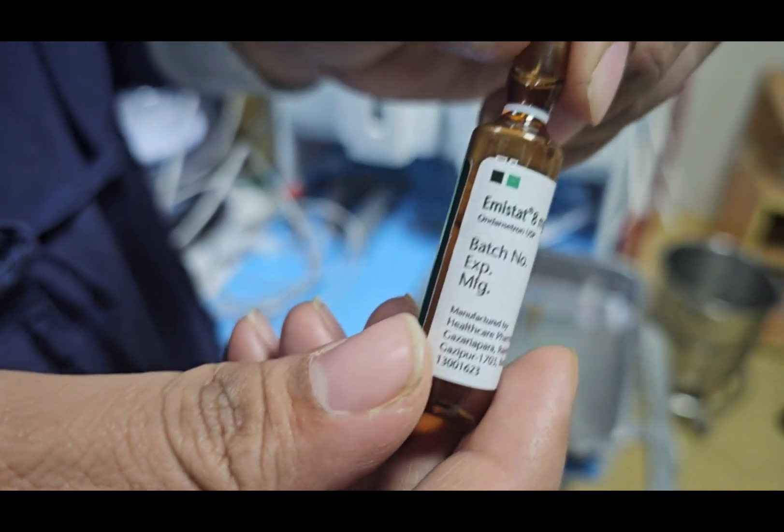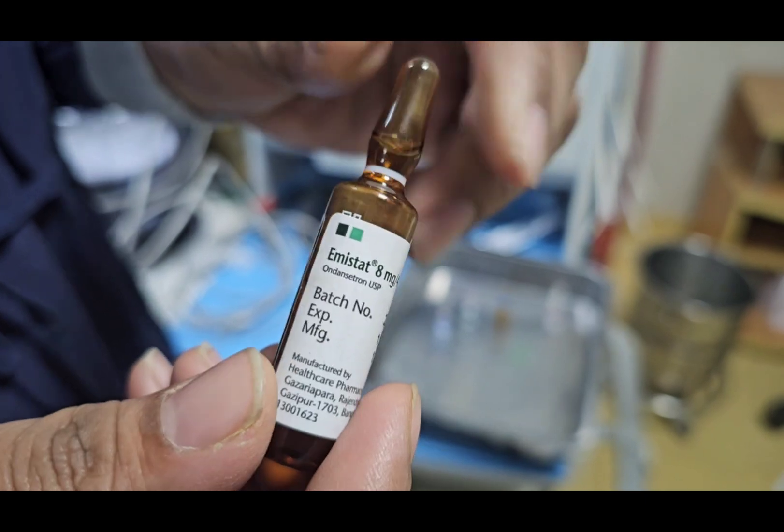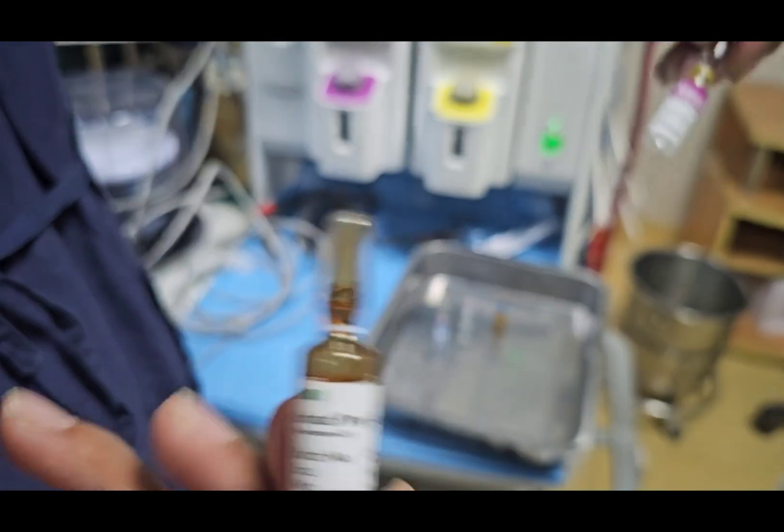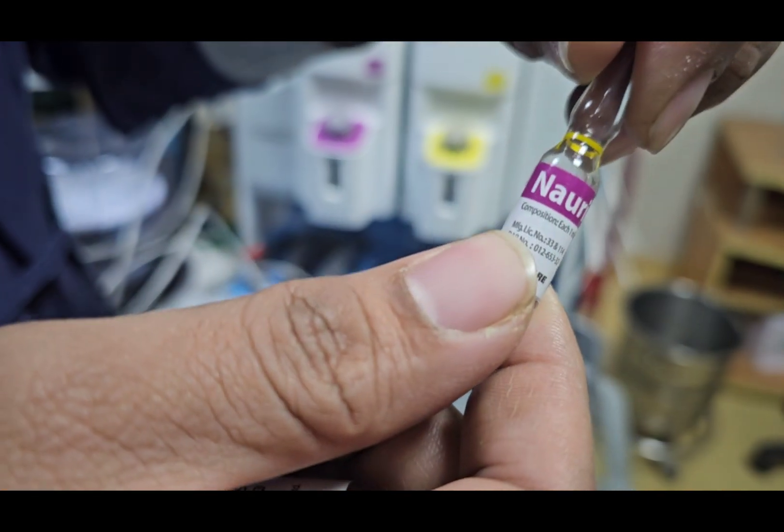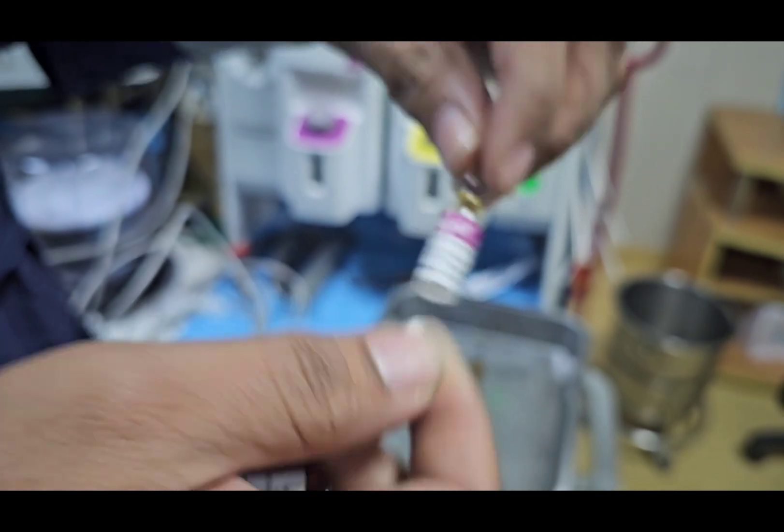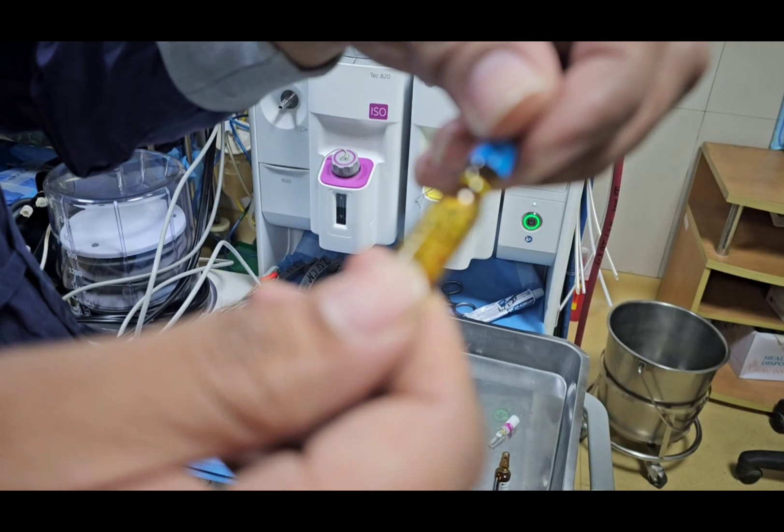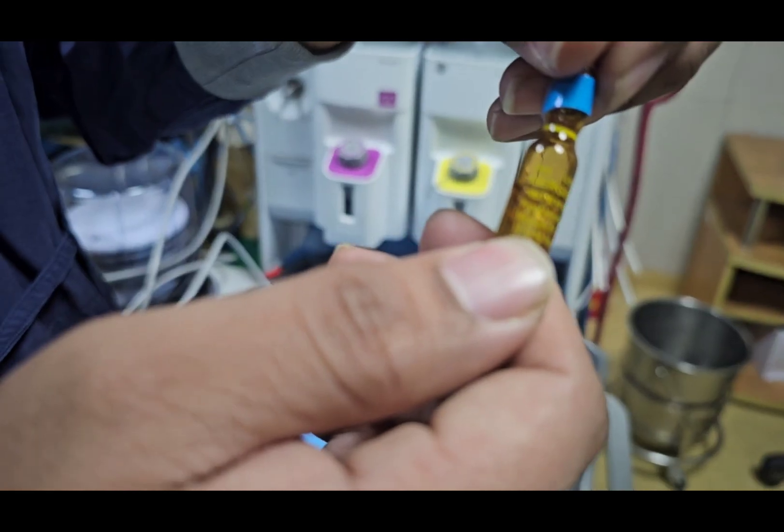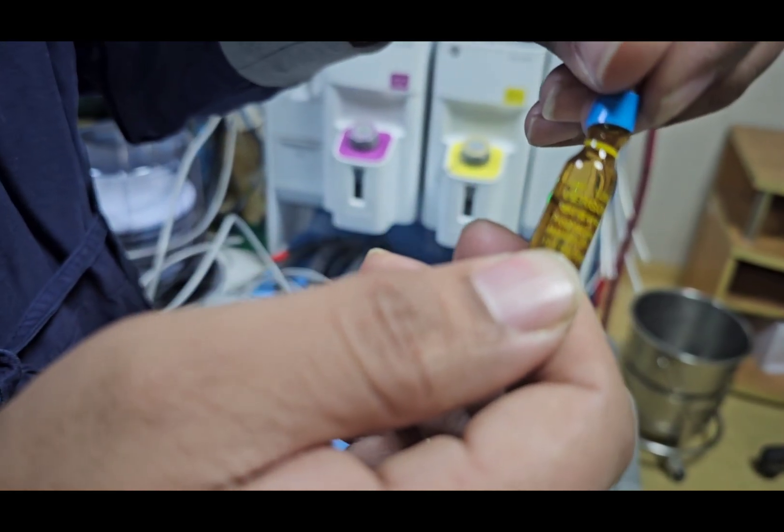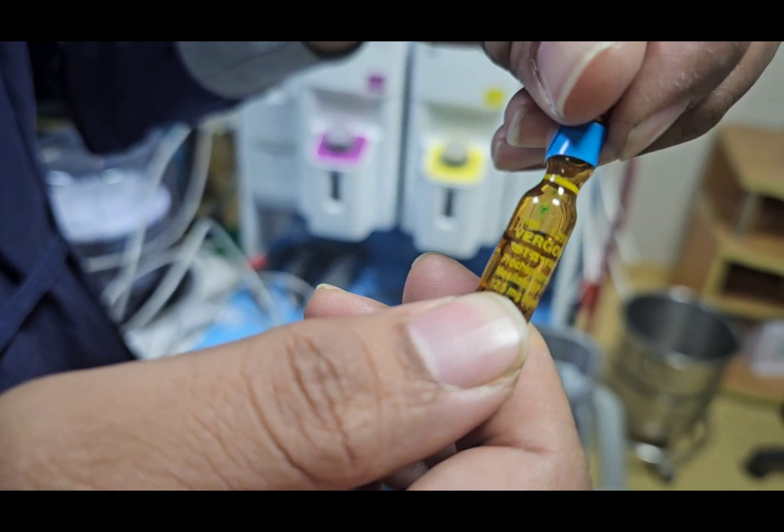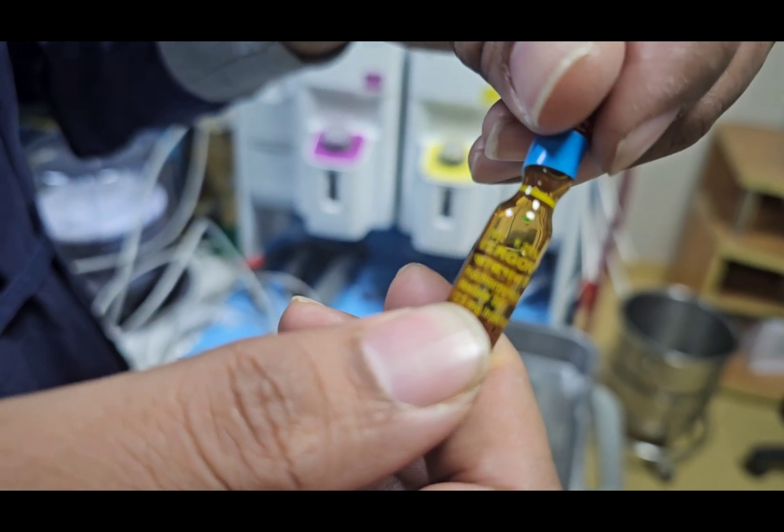Ondansetron is a serotonin receptor antagonist. Here is granisetron 1 milligram, which is also a serotonin receptor antagonist. And this is prochlorperazine, which is more commonly known as Stemetil, 12.5mg, and it is a dopamine receptor antagonist.